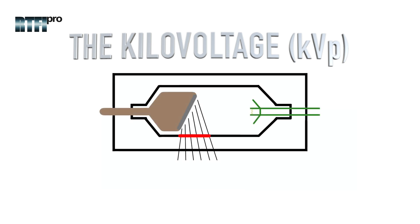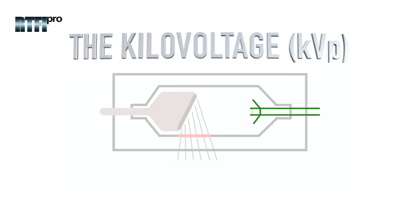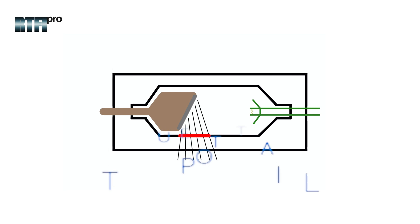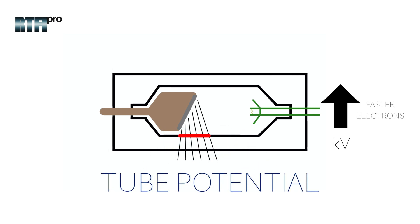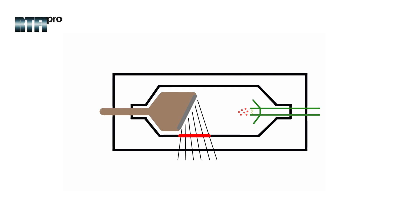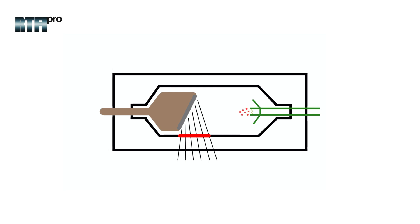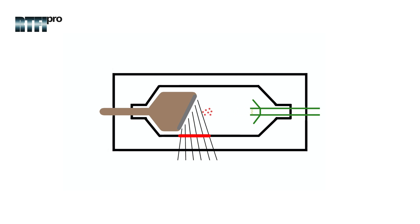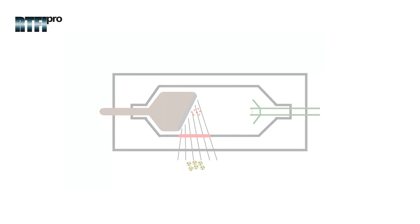The KVP is the result of voltage difference from the negative cathode and positive anode — this is known as tube potential. The higher the KVP, the larger the voltage difference between the cathode and the anode, which results in faster electrons and creates higher radiation energy. The lower the KVP, the lower the voltage difference, which results in slower electrons and lower radiation energy. KVP is the only primary exposure factor that can change the energy of the beam. Increasing KVP increases intensity just as milliampere seconds does, but it also increases the quality of the beam.